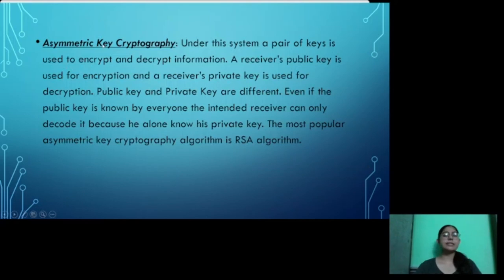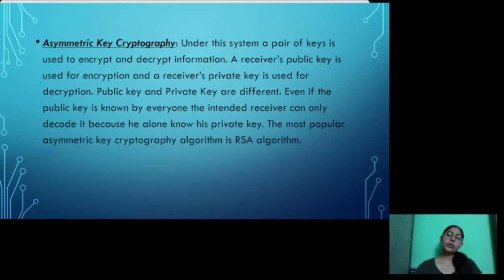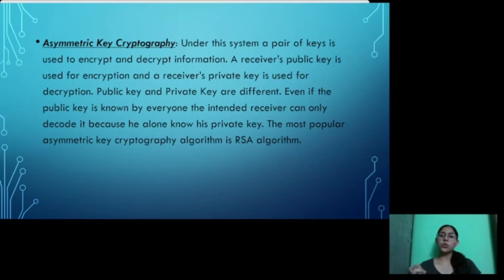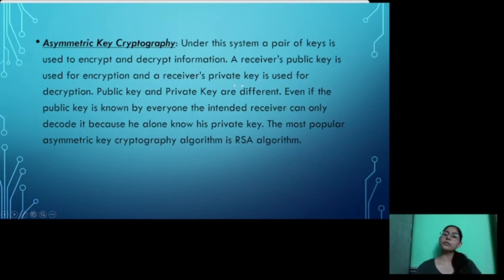The second type is asymmetric key cryptography. Under this system, a pair of keys is generated for encryption and decryption. Unlike symmetric key cryptography, we use two keys: a public key and a private key. Each individual has both a public and private key. The receiver's public key is used for encryption, and the receiver's private key is used for decryption. Even if the public key is known by everyone, only the intended receiver can decode it because only they know their private key. The most popular asymmetric cryptography algorithm is RSA.